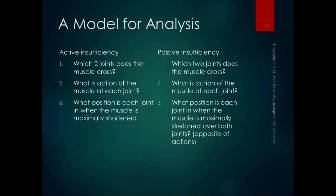This is my model for analysis of active and passive insufficiency questions. For active insufficiency, let's use the hamstrings as an example. Which two joints does the muscle cross? The hamstrings cross the hip and the knee. What's the action of the muscle at each joint? The hamstrings extend the hip and flex the knee. So the position where the muscle is maximally shortened is hip extension and knee flexion. For passive insufficiency of the hamstrings, the muscle still crosses the hip and knee doing hip extension and knee flexion, but to maximally stretch it over both joints, we have to do the opposite — hip flexion and knee extension.